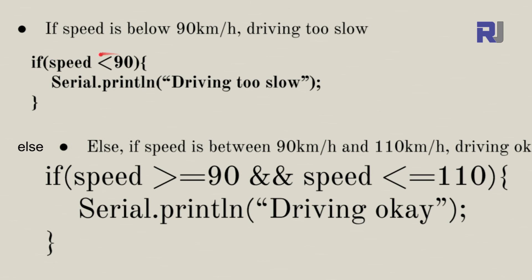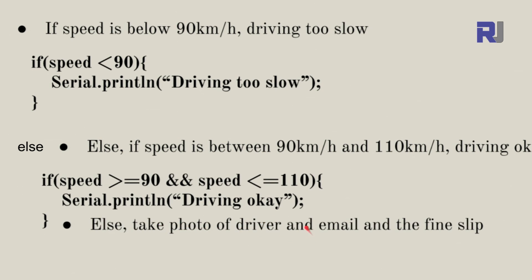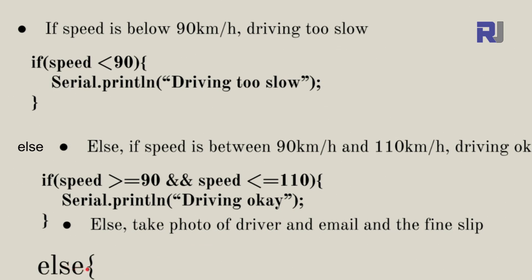For the else clause — take photo of the driver and email the fine slip — the driver is not below 90 and not between 90 and 110, so it must be above 110. We write else and then the action. Notice that only if has a condition; else has no condition. Else applies when all the if conditions fail and are all false.